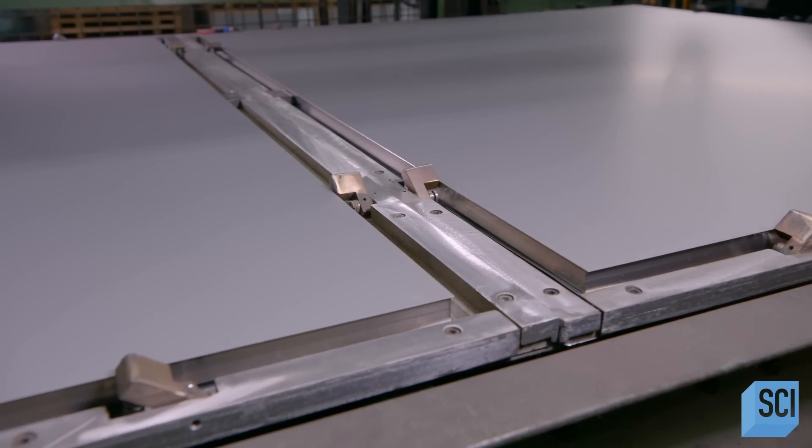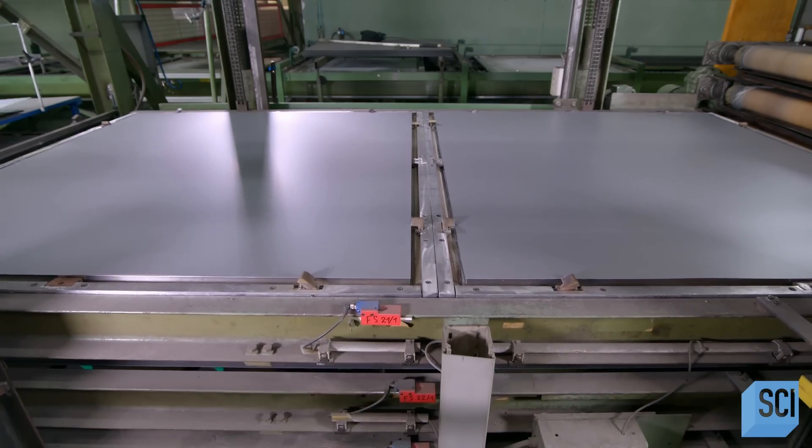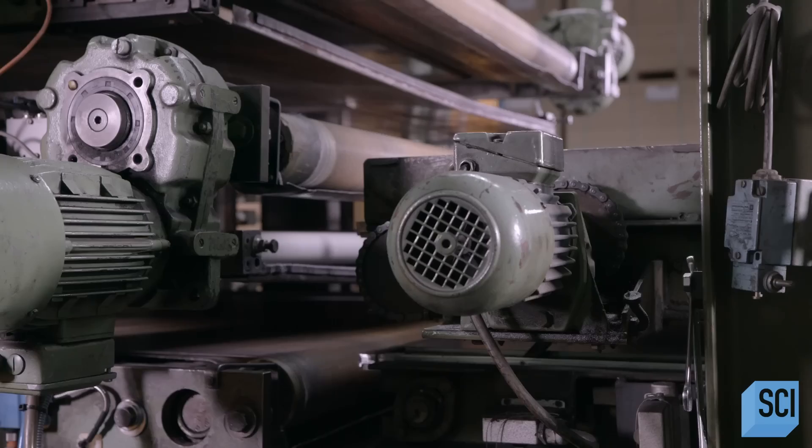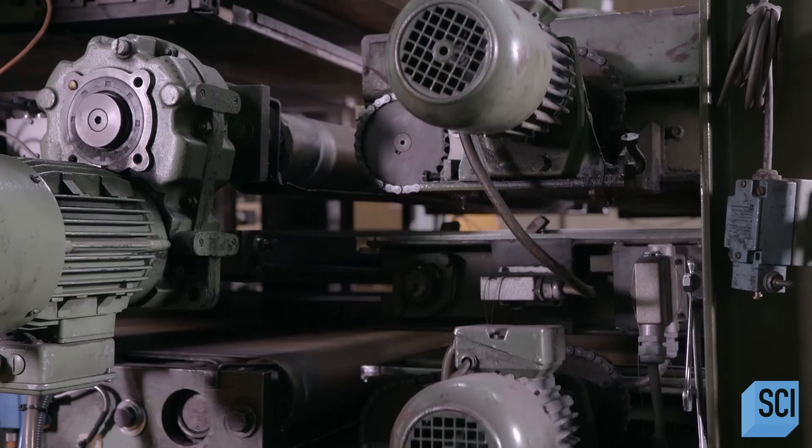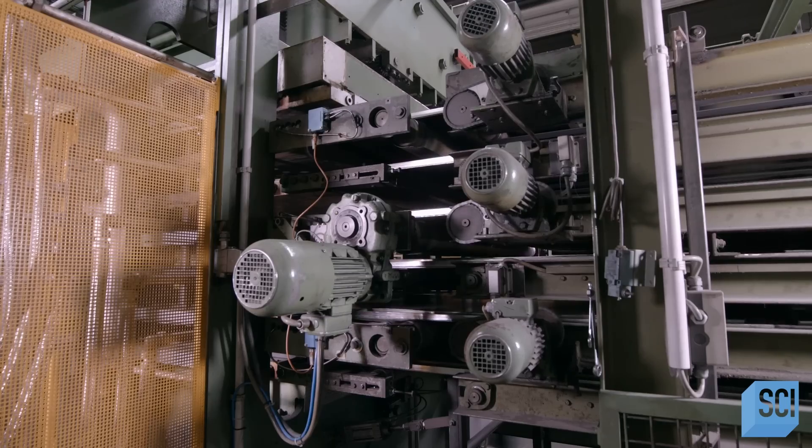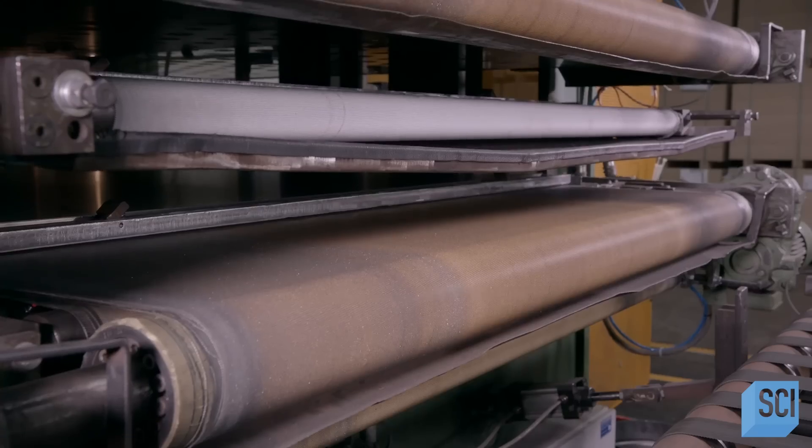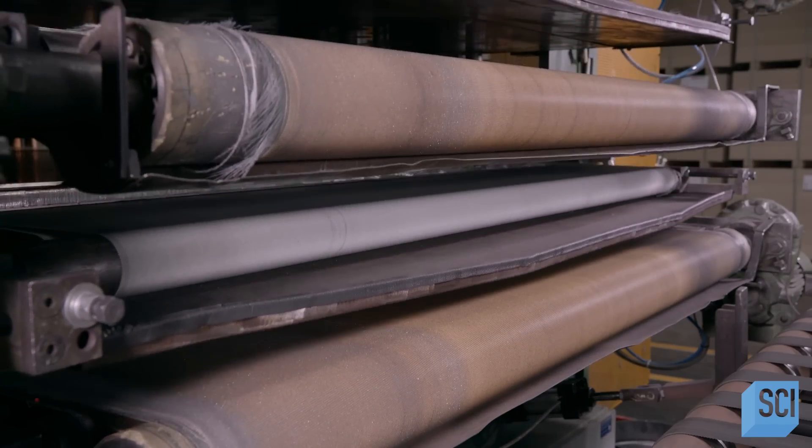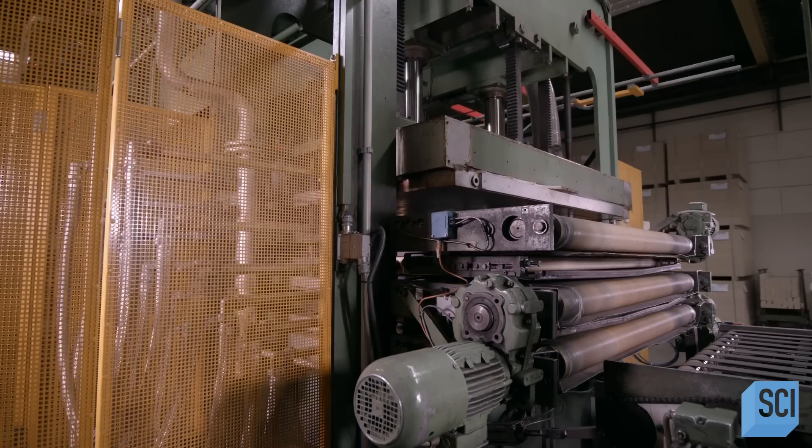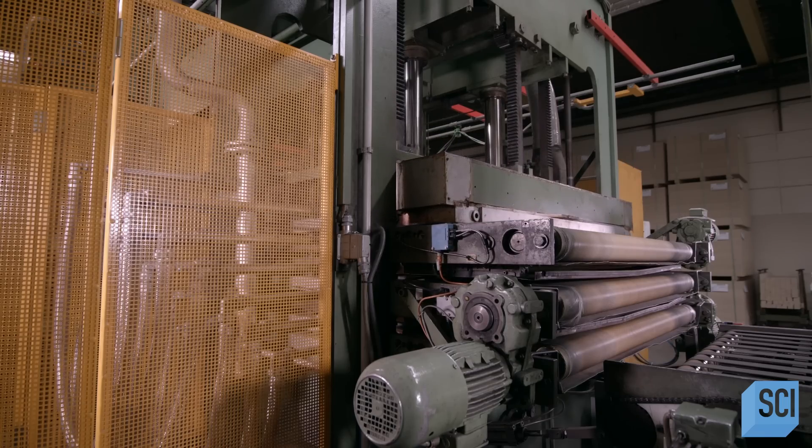Next, the conveyor loads the jig into a press. Once 12 jigs have been loaded onto the press, it heats to 239 degrees Fahrenheit and compresses them for about 10 minutes. This process activates the adhesive and bonds the components of each plate into a single unit, one framed plate half.